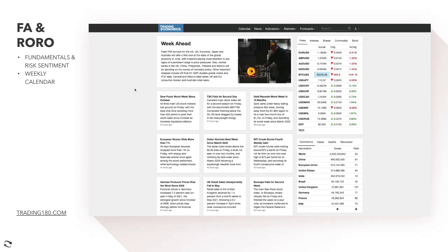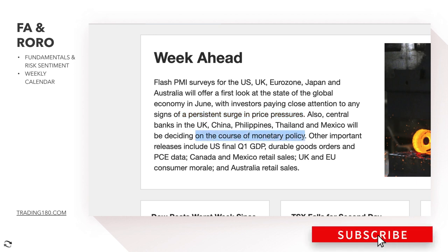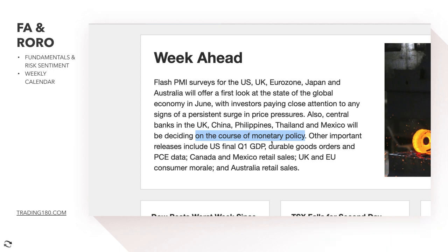Let's get into the week ahead. Flash PMI surveys for the US, UK, Eurozone, Japan and Australia will offer a first look at the state of the global economy in June, with investors paying close attention to any signs of a persistent surge in price pressures. Central banks in the UK and China will be deciding on the course of monetary policy, which is always important because the central bank's monetary policy really decides the valuation of a currency.